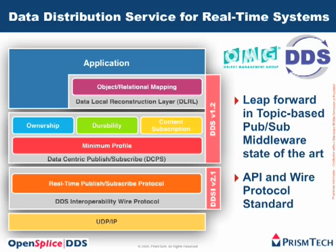If you look at the picture, at the bottom we see that there is a wire protocol interoperability standard called DDSI, and today we are at version V2.1. This requires as a basic assumption only the availability of UDP-IP. On top of this, there is the API standard called DDS, and today we are at version V1.2.